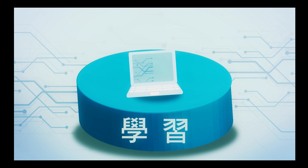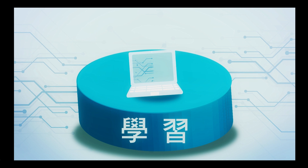The neocortex is the highest product of evolution, and primates have the highest proportion of this brain structure. This distinction separates humans from other mammals.